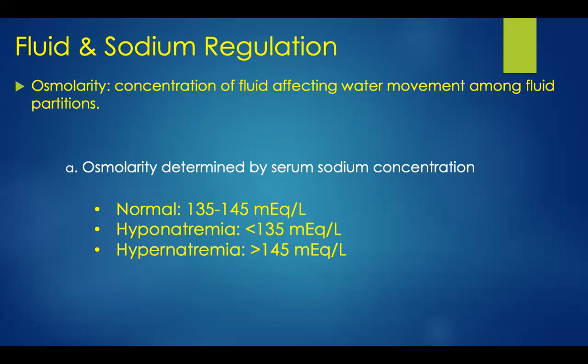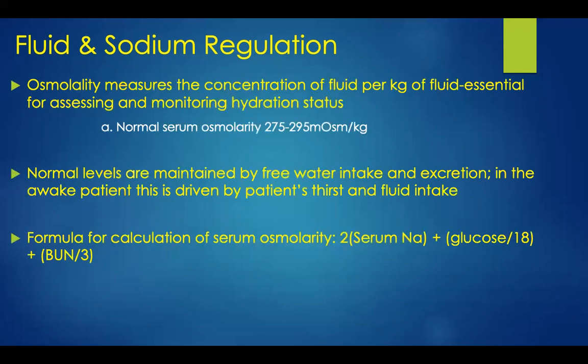Hyponatremia is considered to be anything less than 135 milliequivalents per liter, and a hypernatremic state is a serum sodium of greater than 145 milliequivalents per liter. Osmolarity measures the concentration of fluid per kilogram of fluid and is essential for assessing and monitoring hydration status. The normal serum osmolarity is 275 to 295 milliosmoles per kilogram. The formula for calculating serum osmolarity is two times the serum sodium plus glucose divided by 18 plus BUN divided by 3.